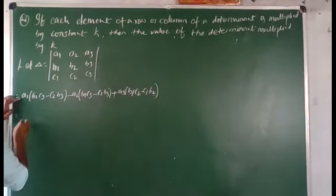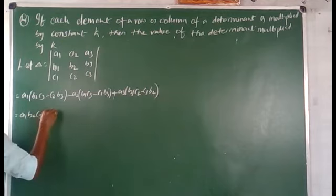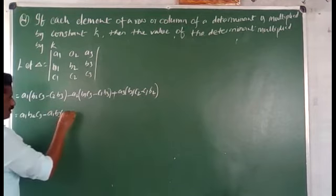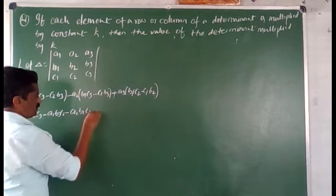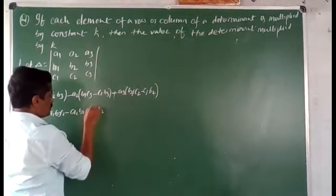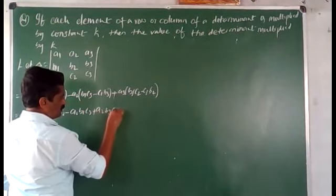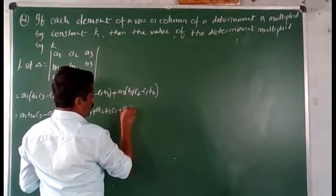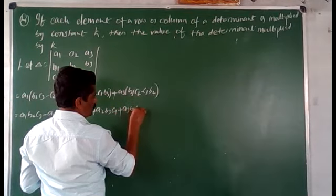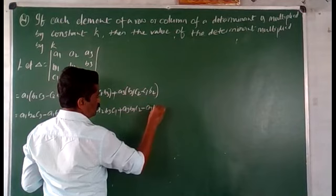Simplifying, that equals a1·b2·c3 − a1·b3·c2 − a2·b1·c3 + a2·b3·c1 + a3·b1·c2 − a3·b2·c1.